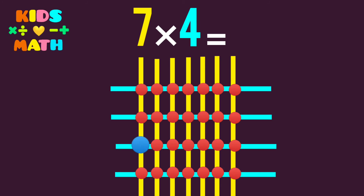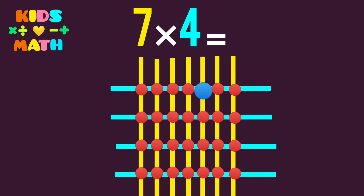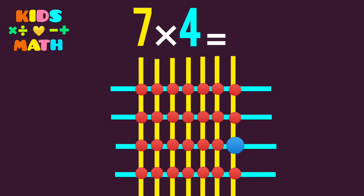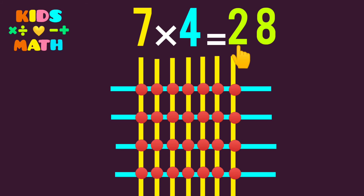We count: 1, 2, 3, 4, 5, 6, 7, 8, 9, 10, 11, 12, 13, 14, 15, 16, 17, 18, 19, 20, 21, 22, 23, 24, 25, 26, 27, 28. So 7 times 4 equals 28.